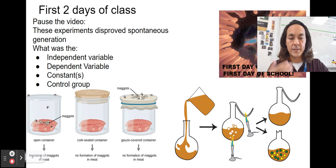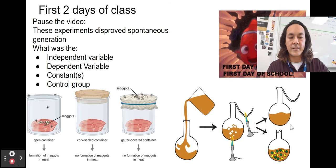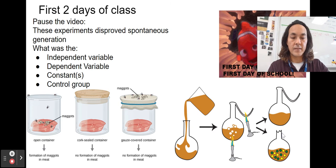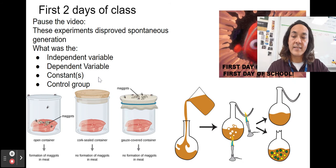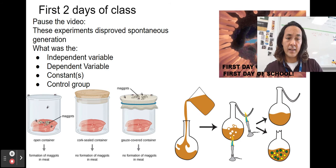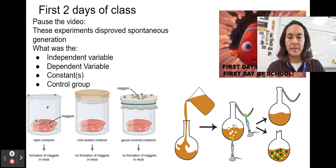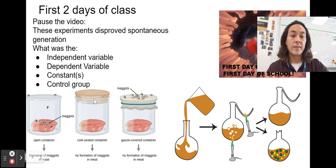For Pasteur's swan neck flask experiment, the independent variable is whether the flask had the curved neck or was wide open. The dependent variable was the growth of microorganisms — when open, they grew rather quickly. Constants include the same type of nutrient broth inside each flask. The control group serves as the standard for comparison — probably the open flask. This helped disprove spontaneous generation.